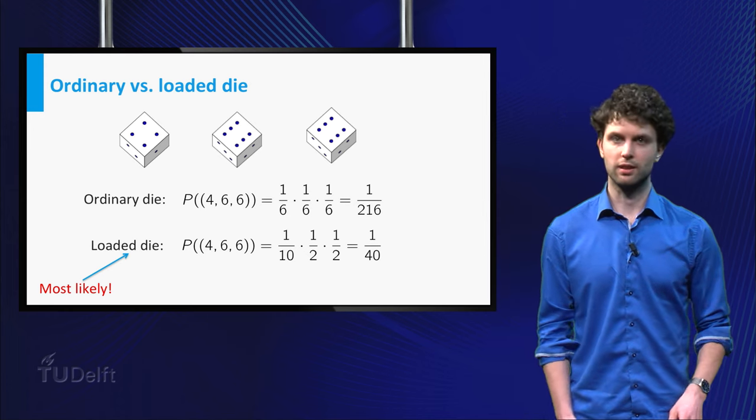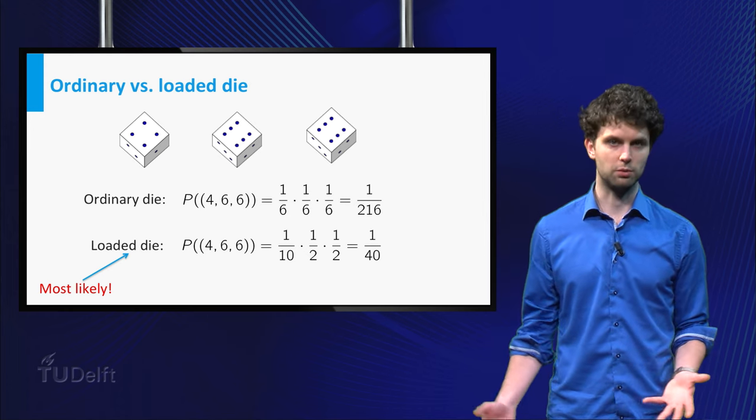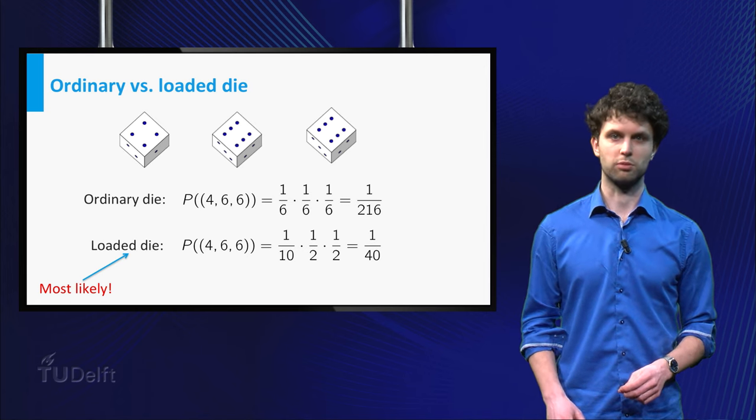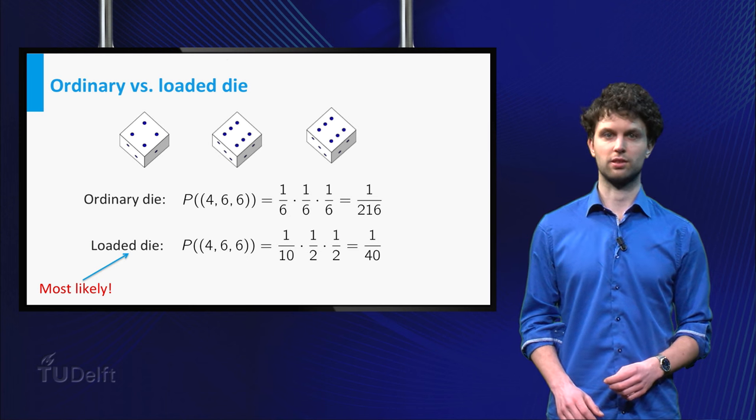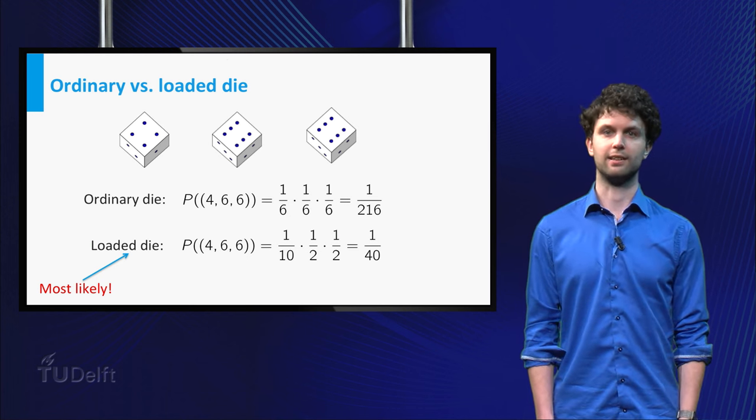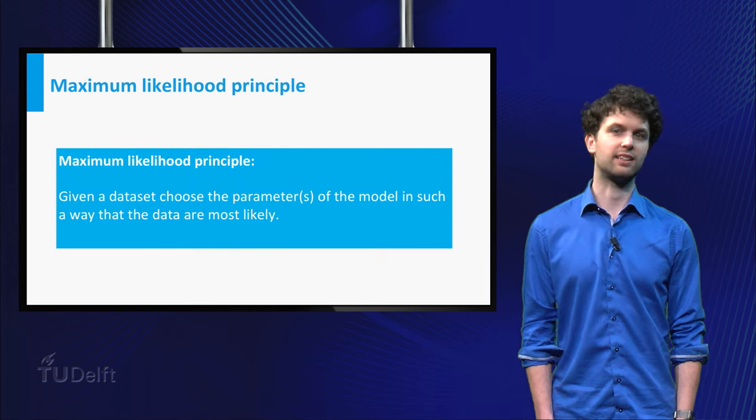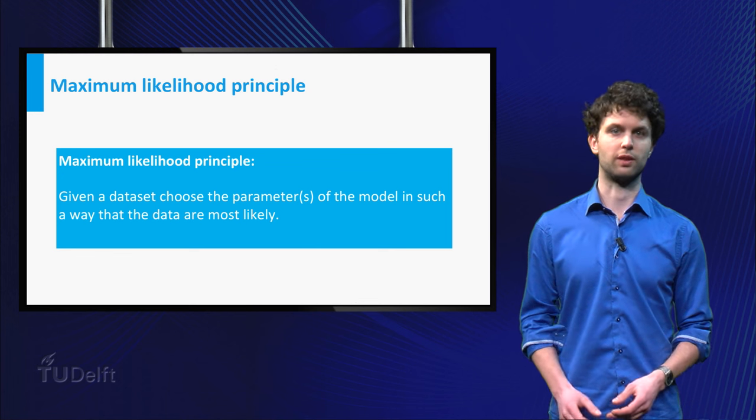In answering the previous question, you probably chose that parameter, in this case one of the two dies, such that the probability of obtaining the actually observed data is the largest. This is the basic idea of the maximum likelihood principle. It is a general principle to estimate parameters, and we can formulate it as follows.